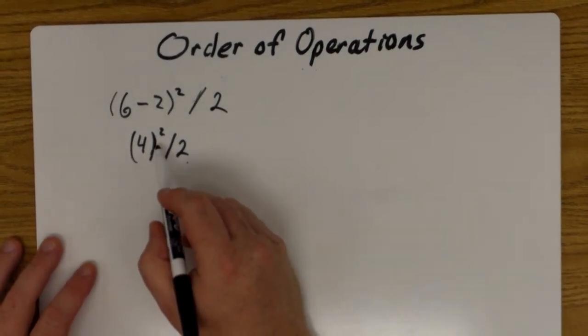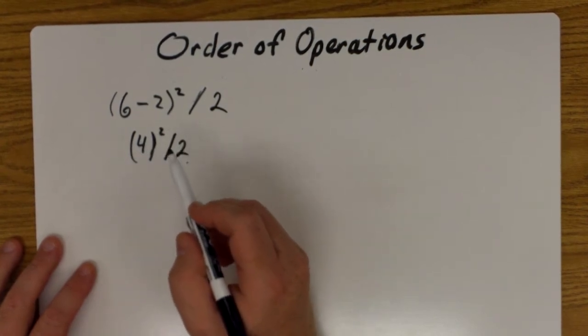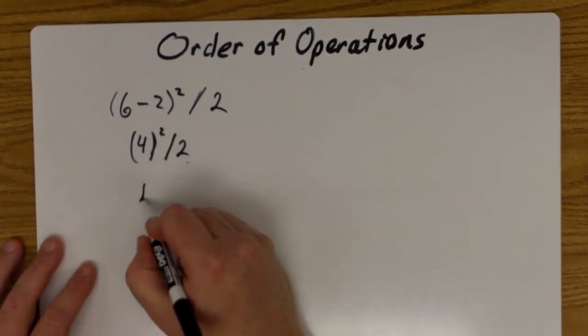Next in the order of operations is to do the exponent before you do the divide. Four to the second power is not four times two, it is four times four, which gives us 16.